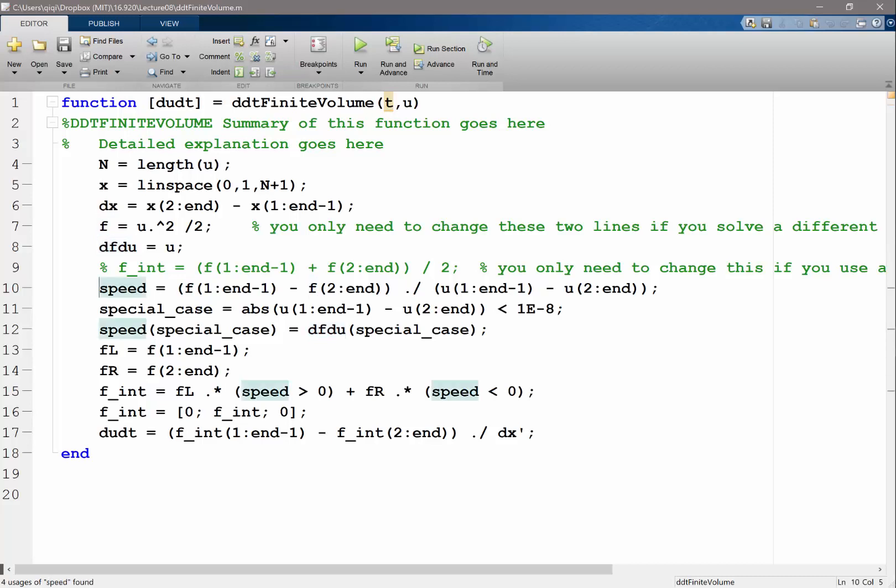And then we produced the speed which is the speed of the little discontinuities, little or big discontinuities, right? So this is the formula for the speed of a shock. And then the special case is when the solutions are pretty much equal so that we get a division by zero, right? Zero divided by zero and we want to avoid that by setting the speed of the special case to be the characteristic speed.